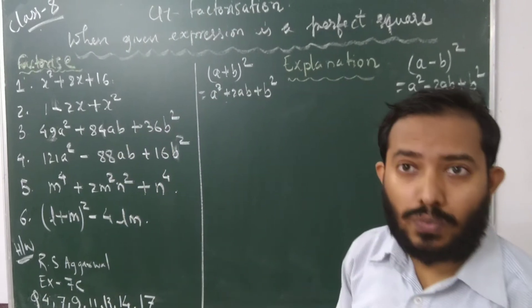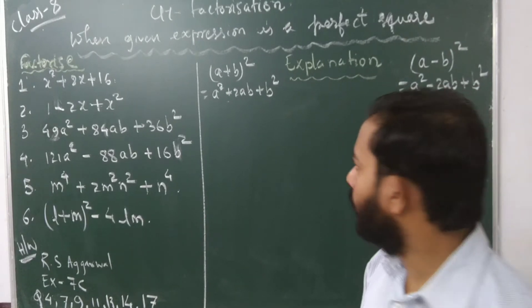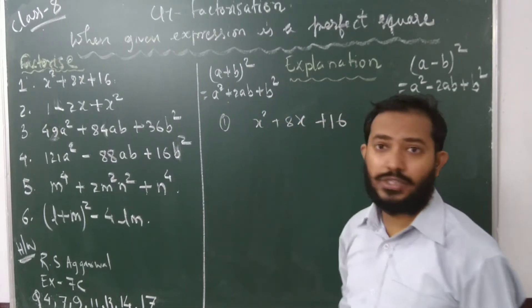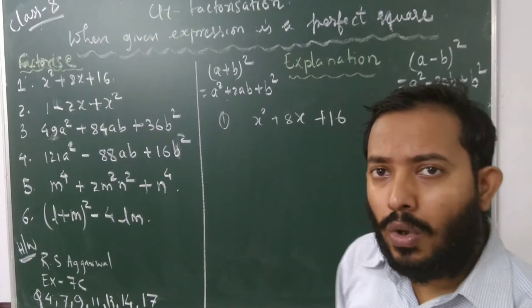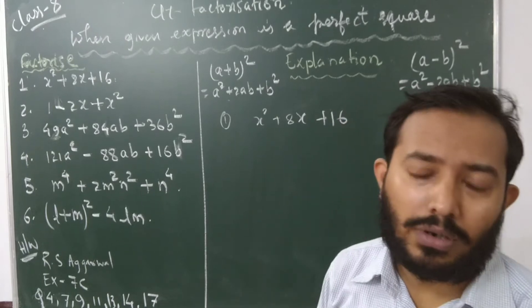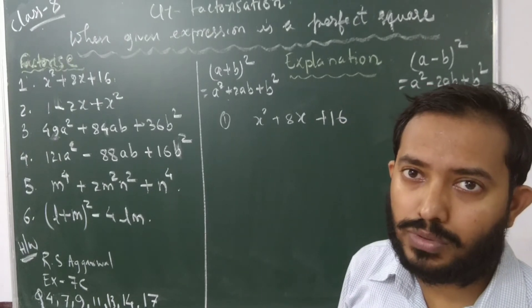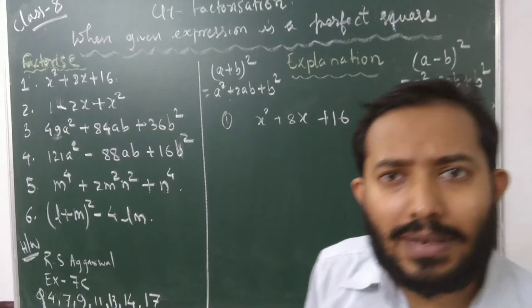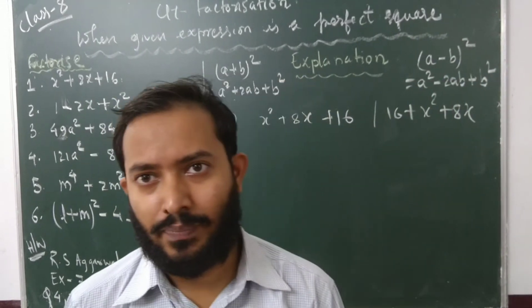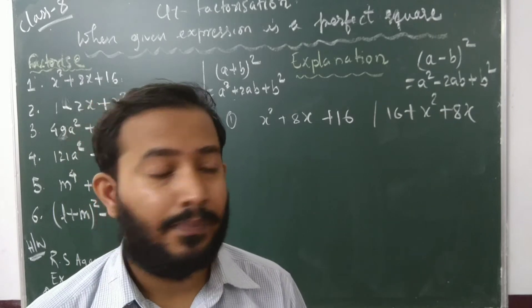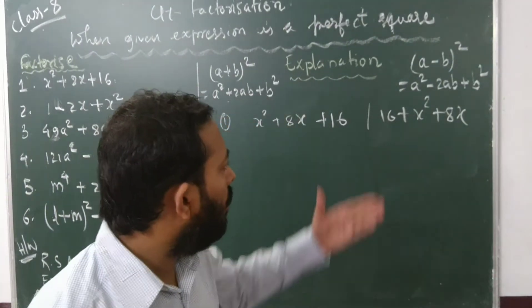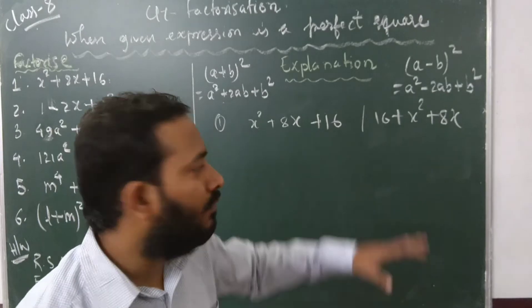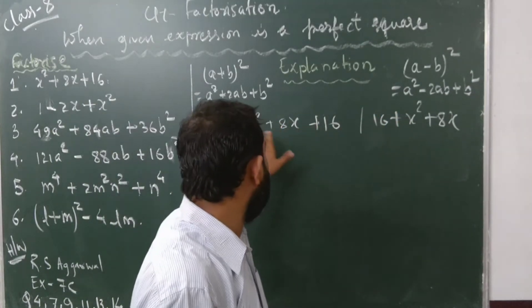First one: x² + 8x + 16. Now, look at the question — it is already in descending order. Whenever you get a problem given in a different form like 16 + x² + 8x, you need to first rearrange it. You have to write the terms in descending order, meaning by decreasing powers of the variable.